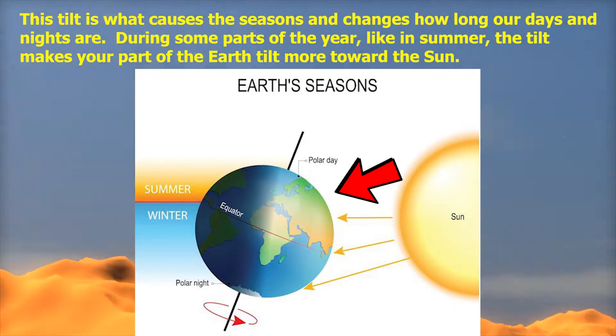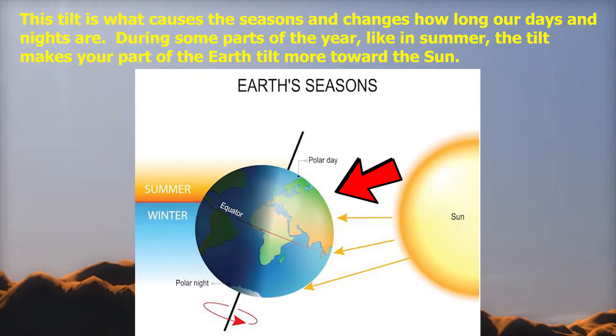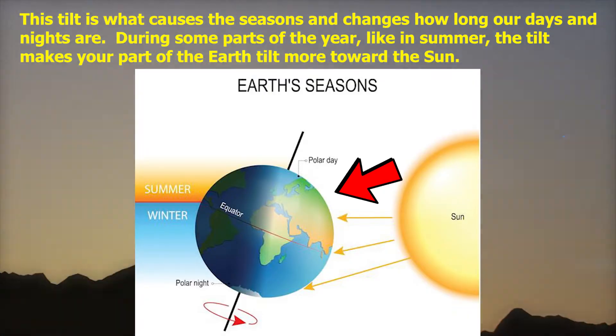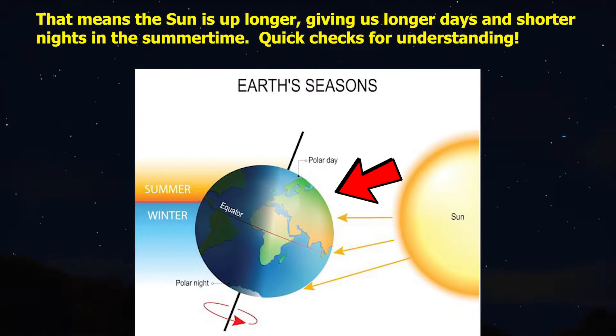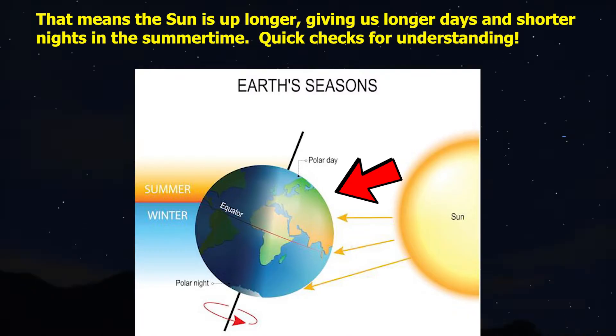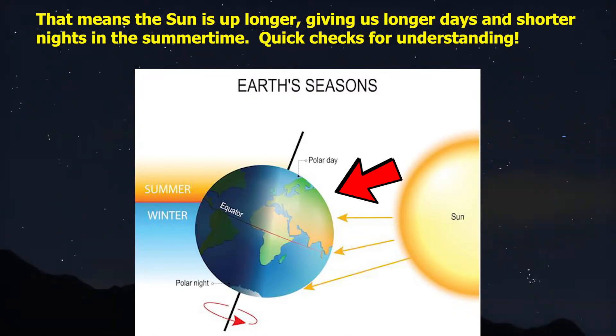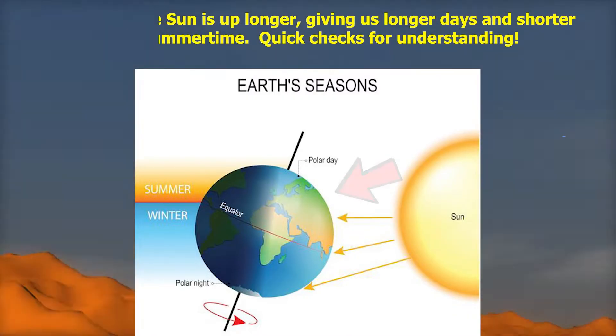During some parts of the year, like in summer, the tilt makes your part of the earth tilt more towards the sun. This means that the sun is up longer, giving us longer days and shorter nights in the summertime.